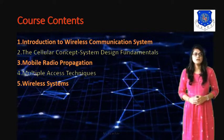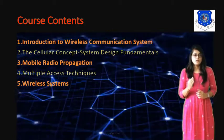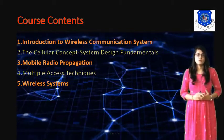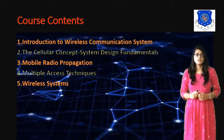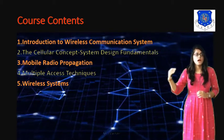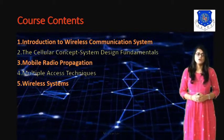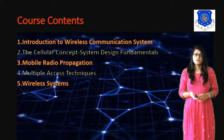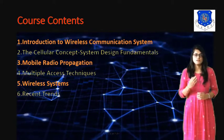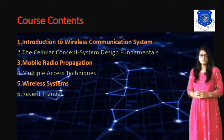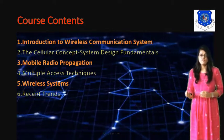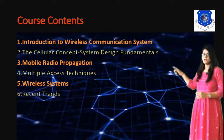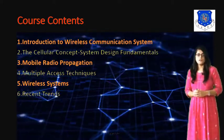In Unit 5, wireless systems are covered. We will discuss the second generation standard GSM in detail — its frame structure, architecture, and the number of forward and reverse channels and how the signal is coded. This is followed by CDMA forward and reverse channel structure. In Unit 6, recent trends are covered — wireless standards like Bluetooth, Wi-Fi, and WiMAX. These are all six chapters of the wireless communication course.